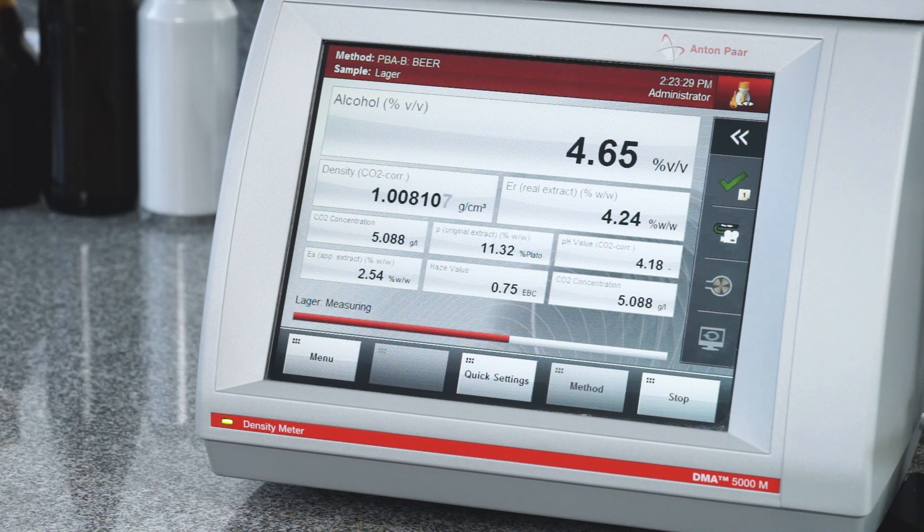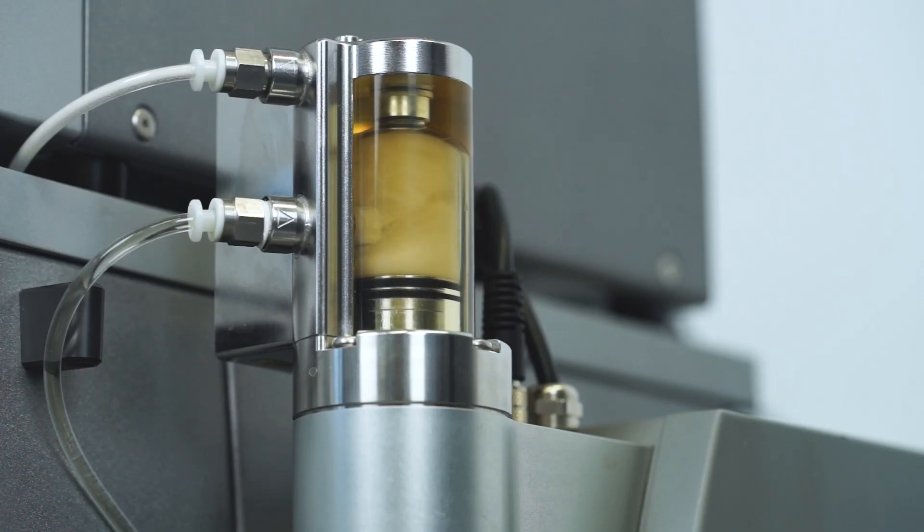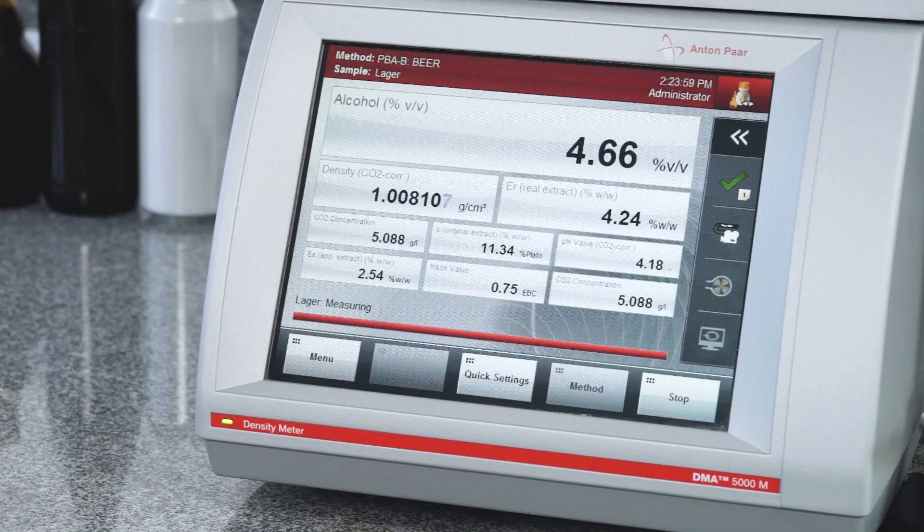As soon as the automatic filling procedure is completed, the PBA-B system will start the measurement sequence of all devices. The CARBO-QC-ME performs the multiple volume expansion to measure the real dissolved CO2 content without being influenced by the presence of nitrogen or oxygen in the filled sample, while alcohol content, density, extract, and optionally pH, color, and dissolved oxygen are measured simultaneously.